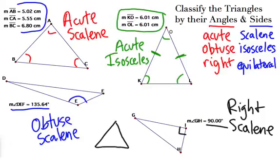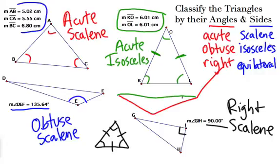An equilateral triangle would look like this — all three sides would be equal, and it will always have to have all acute angles. Remember, you can never have a triangle with two obtuse or two right angles. If I draw an obtuse angle and then another obtuse angle, I can't connect the triangle. So you can never have more than one obtuse or more than one right angle in a triangle. That's the different classifications for triangles.